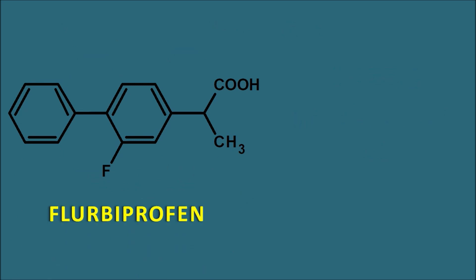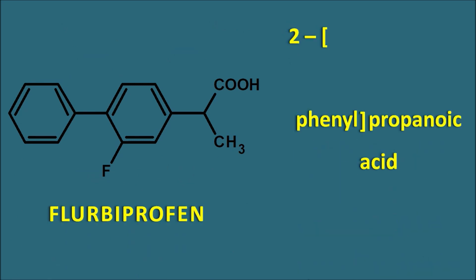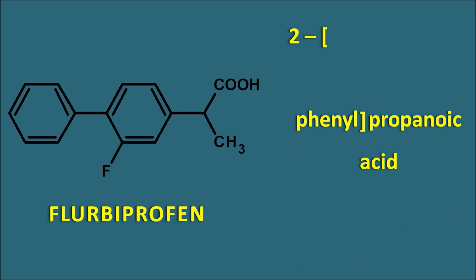The next drug is flurbiprofen. Flurbiprofen is also a 2-phenyl propanoic acid derivative with different substituents. It has a phenyl group at the fourth position and a fluoro group at the third position. So the substituents are 3-fluoro and 4-phenyl. These two groups are present on the phenyl propanoic acid moiety — that is flurbiprofen.